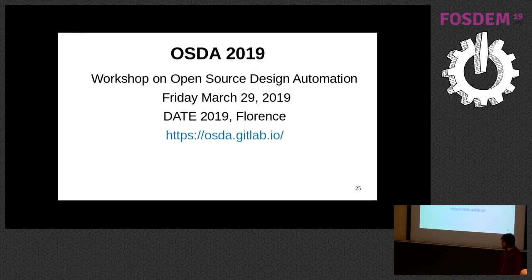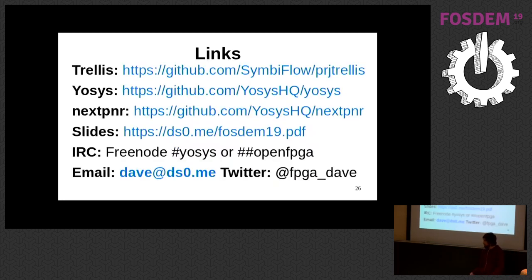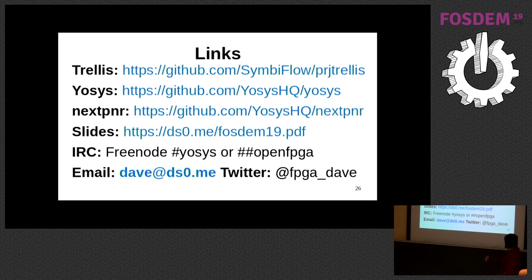A brief announcement: if this is of interest, there's going to be a workshop on open source design automation — looking at open source tools for FPGAs and ASICs — on Friday March 29th at DATE 2019, the EDA tools event in Florence, Italy. Project Trellis (bitstream documentation), Yosys synthesis, and NextPNR are all on GitHub, all ISC licensed permissive open source. To get involved, join IRC: hash-yosys and hash-open-fpga on Freenode.